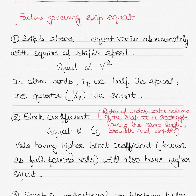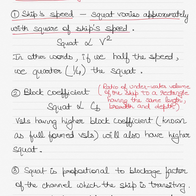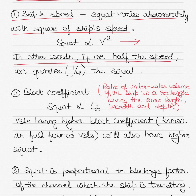Now let's talk about the factors that govern ship squat. The first one is ship speed. Squat varies approximately with the square of the ship's speed — that is, squat is directly proportional to the square of the velocity, denoted by the letter V. In other words, if we half the speed, we quarter the squat. So reduction in speed leads to reduction in squat.